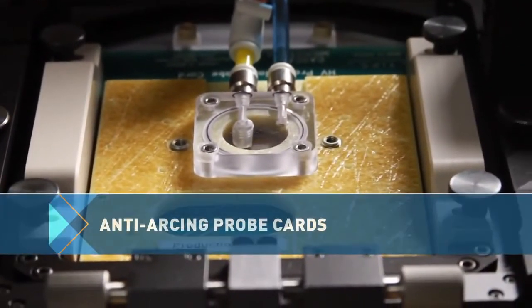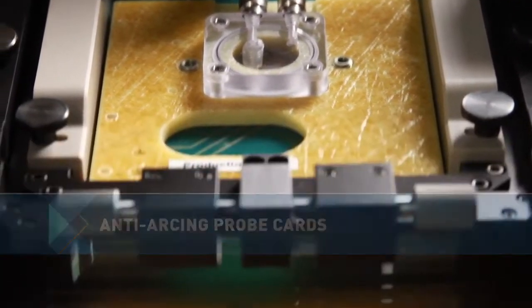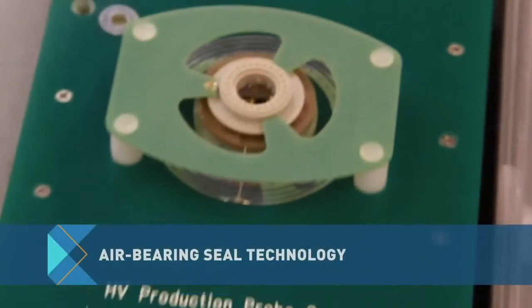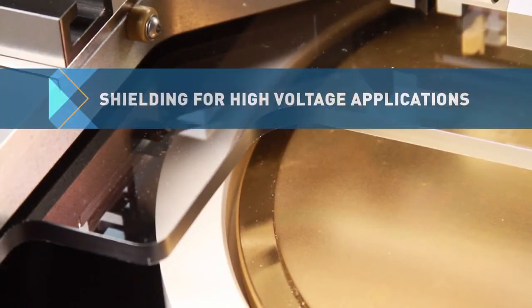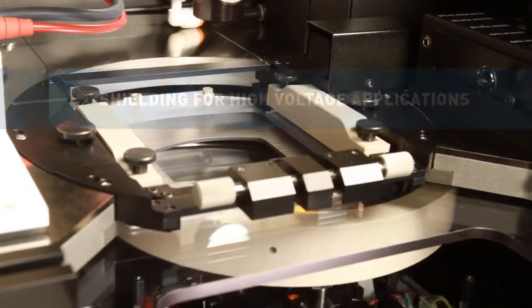An air-bearing anti-arcing probe card provides a high air pressure environment to prevent pad-to-pad arcing. An integrated shielding guards against high voltage damage to probe station electronics.